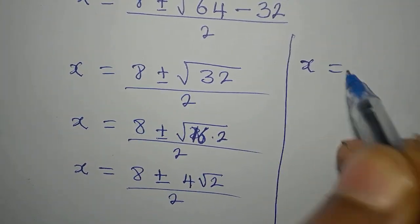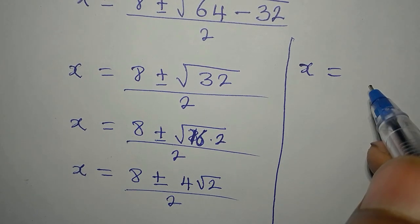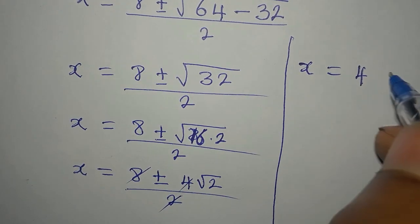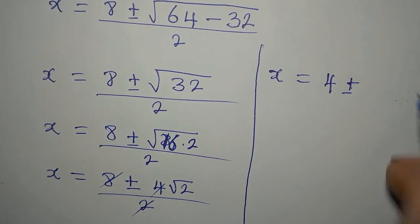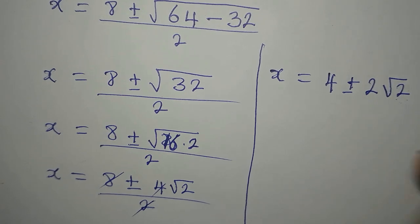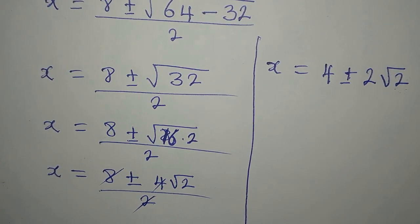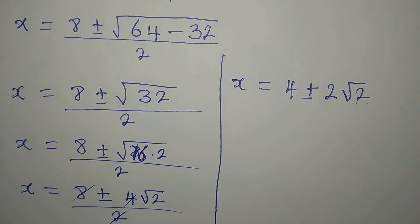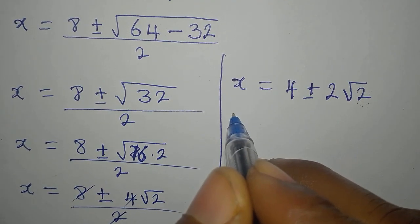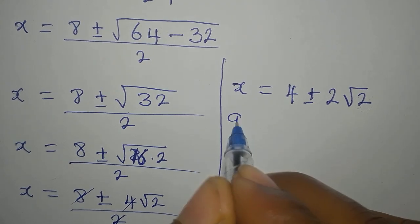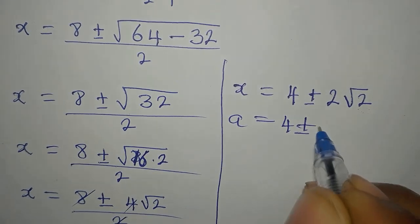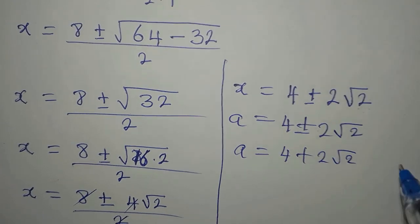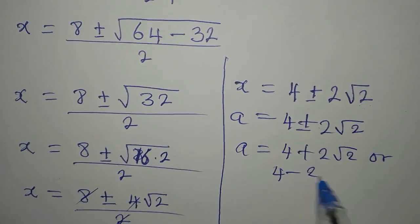And I'll write on this side. So our X will now be equal to... Mind you, 2 can go here. So we have 4. And the same 2 will go here. We have plus or minus 2, then we have root 2. So from here, we can no longer divide. Because the 2 here is gone. So this means that... By the way, this value of X is for A. So our A now is 4 plus or minus 2 root 2. Meaning that A is equal to 4 plus 2 root 2, or 4 minus 2 root 2.